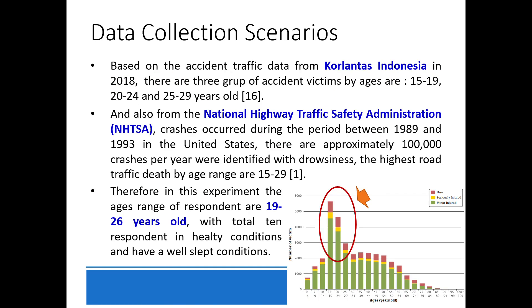Regarding our data collection scenarios, based on traffic accident data from Korlantas Indonesia in 2019, there are three groups of accidents classified by age: 15–19, 20–24, and 25–29 years old. Also from the National Highway Traffic Safety Administration, crashes occurring between 1989 and 1993 in the United States identified approximately 1,100,000 crashes per year related to drowsiness, with the highest crash data by age range being 15–29. Therefore, in this experiment, the age range of respondents is 19–26 years old.